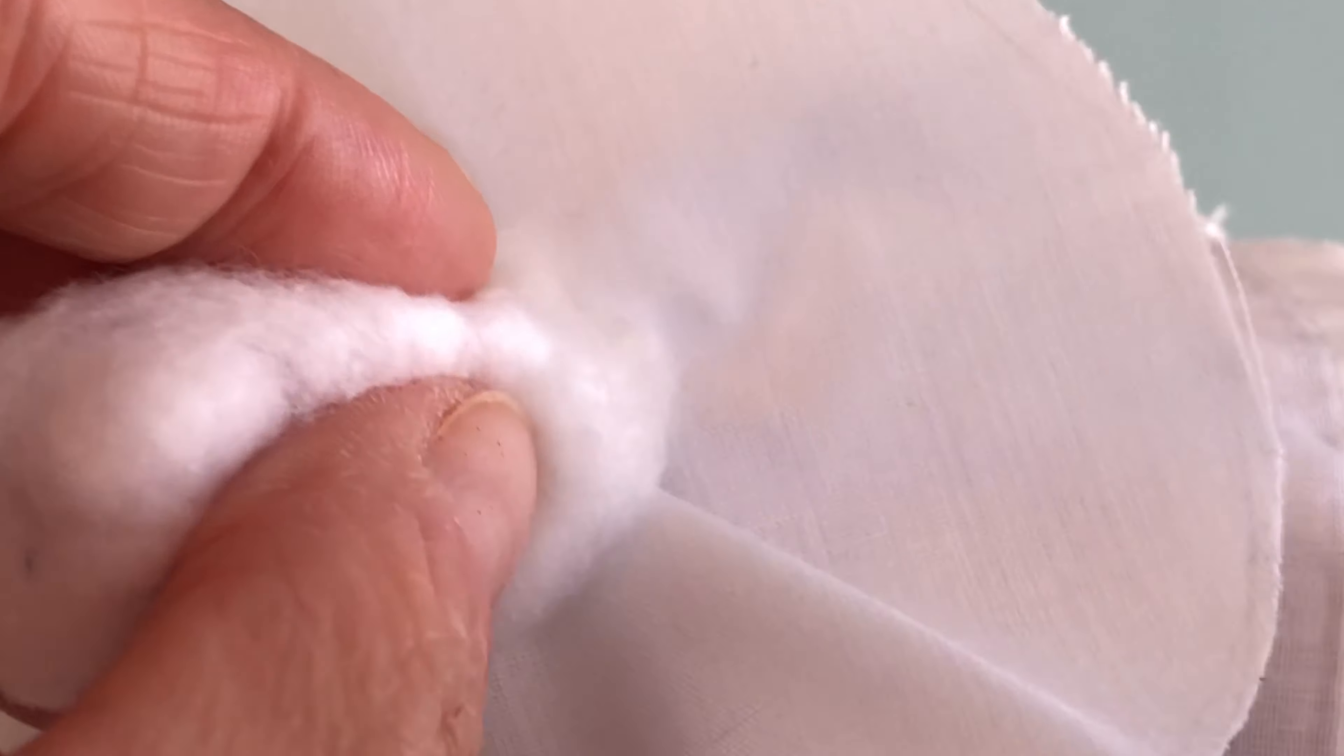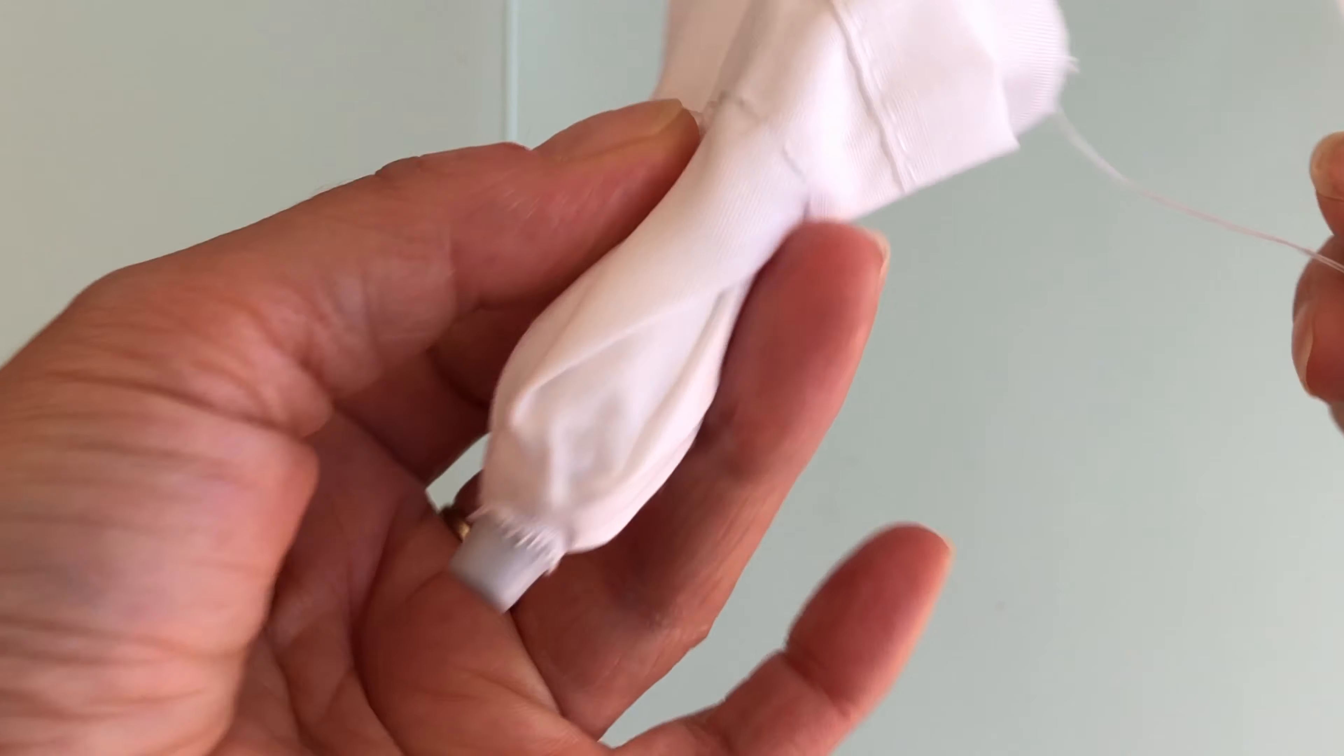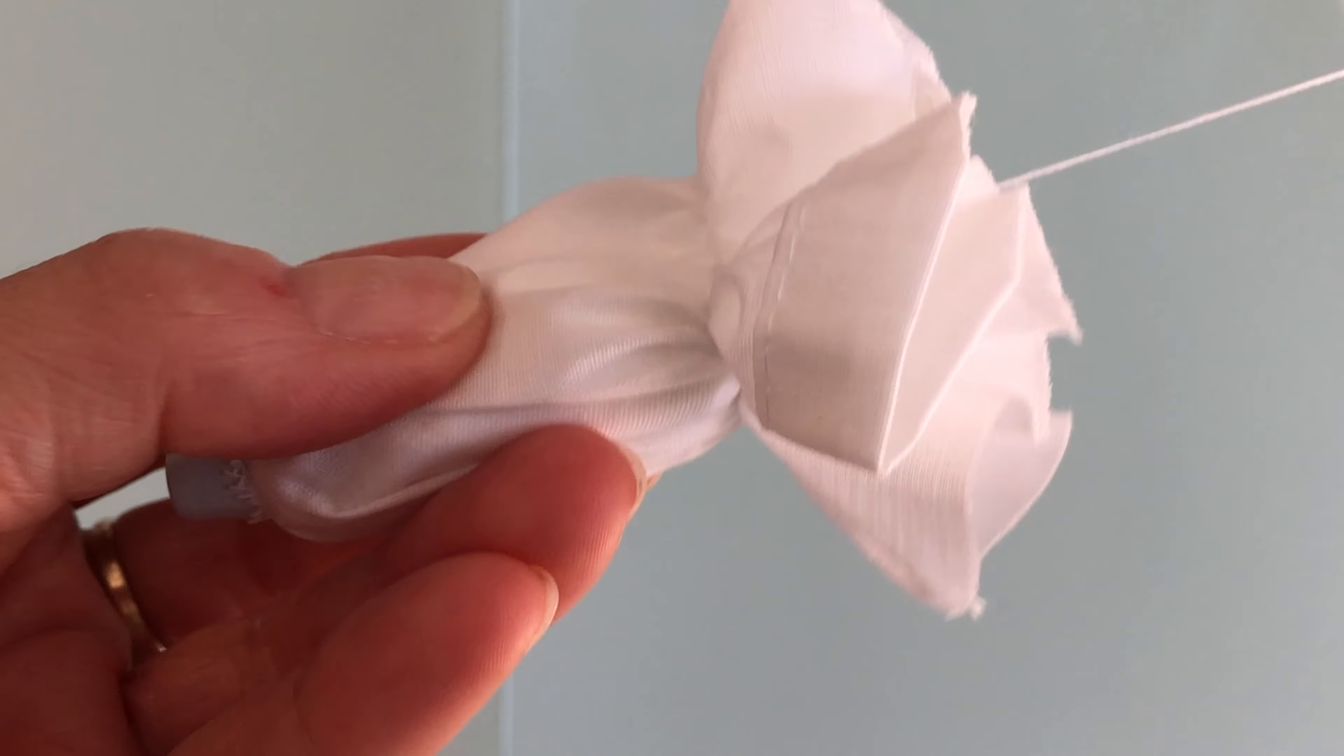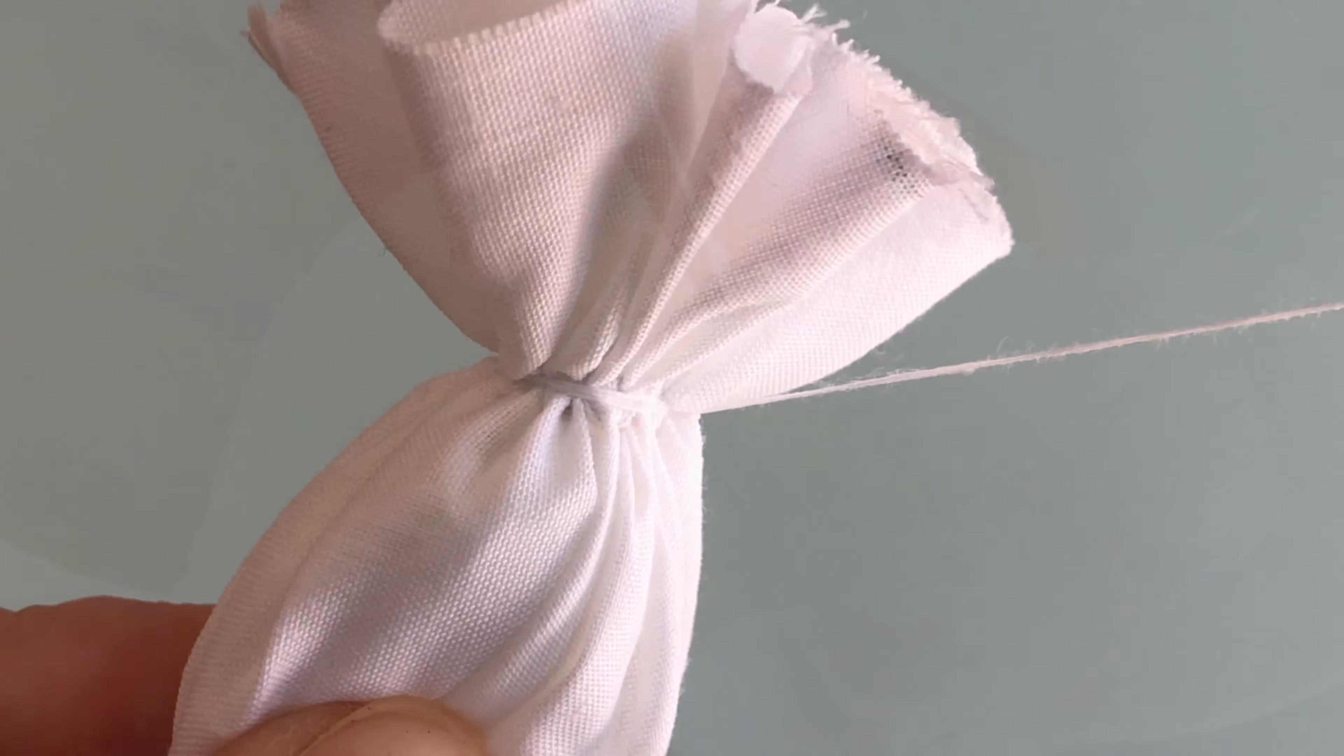Flip upside down and fill with your cotton ball. Gather the fabric over the cotton ball, then pull the thread to close the bag. Stitch through the gather a few times to secure the closure, then knot and cut your thread.